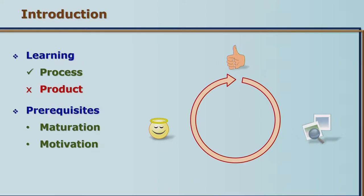The third prerequisite is interest. Without interest, nothing can be achieved. Interest and attention are two sides of the same coin. Once we are attentive, we will develop interest. Therefore, learning to be attentive and to focus on something which we are perceiving is very important in order to learn. So the prerequisites of learning are maturation, motivation, and interest.